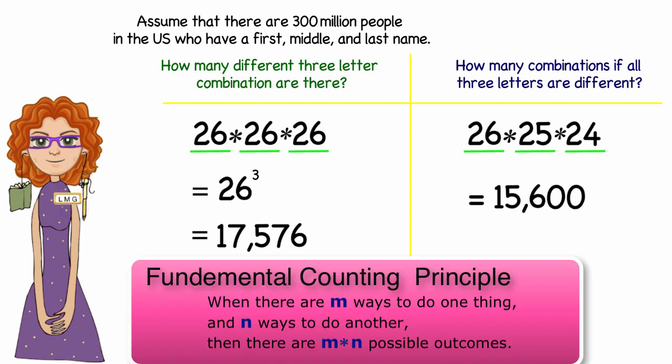The counting principle, or fundamental counting principle as it's often called, allows us to find the number of different outcomes given a series of decisions. This is fundamental in understanding the probability of a certain event occurring.